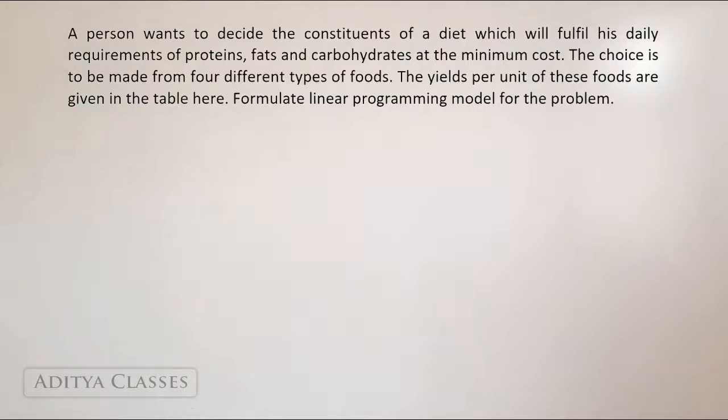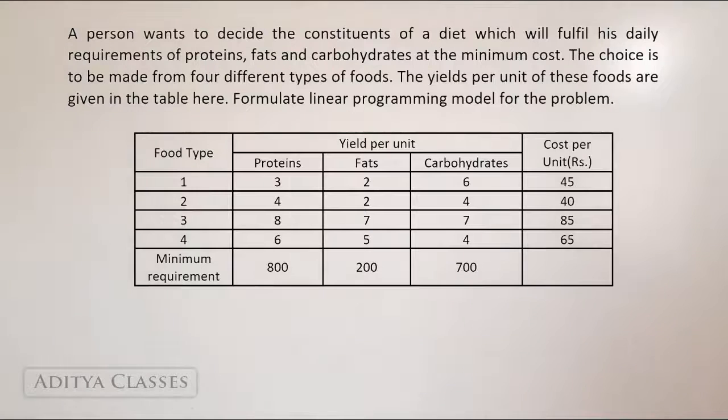Then, the choice is to be made from four different types of foods. The yields per unit of these foods are given in the table below. So here is your table. Now if you have a look at this table, we have four types of foods, one, two, three and four, and then protein, fats and carbohydrates in each of these foods are given. For example, if we take food one, we have three units of protein, two units of fats and six units of carbohydrates. If we take food type four, we get six units of proteins, five units of fats and four units of carbohydrates.